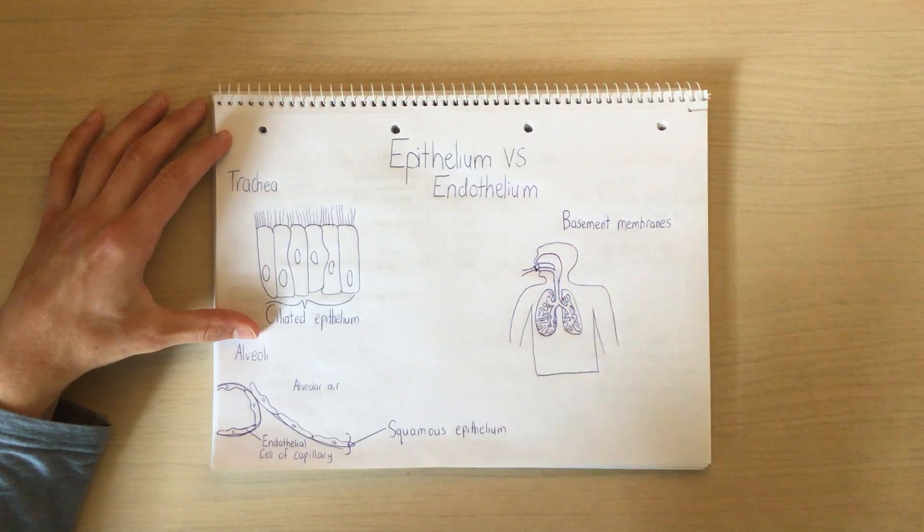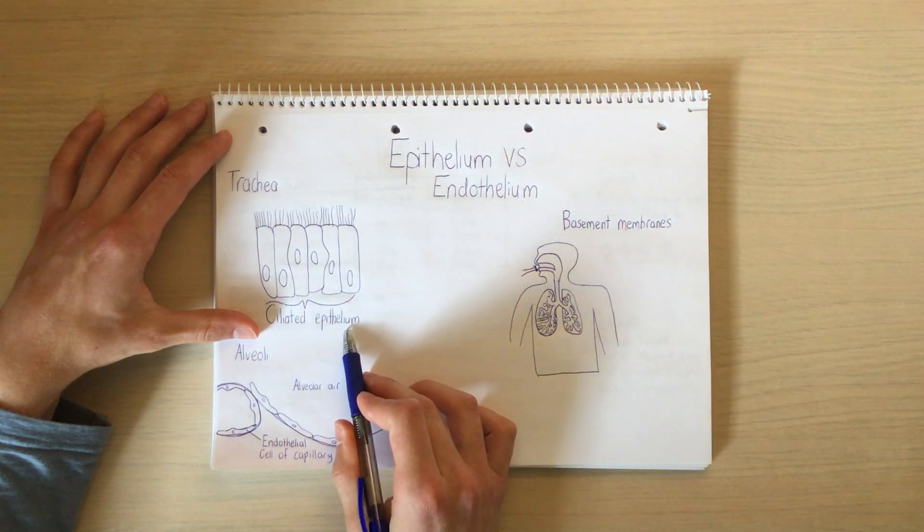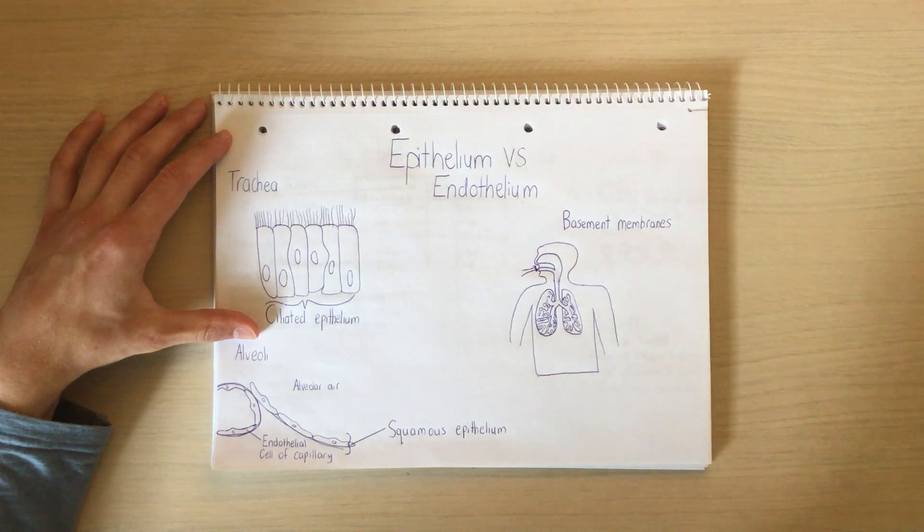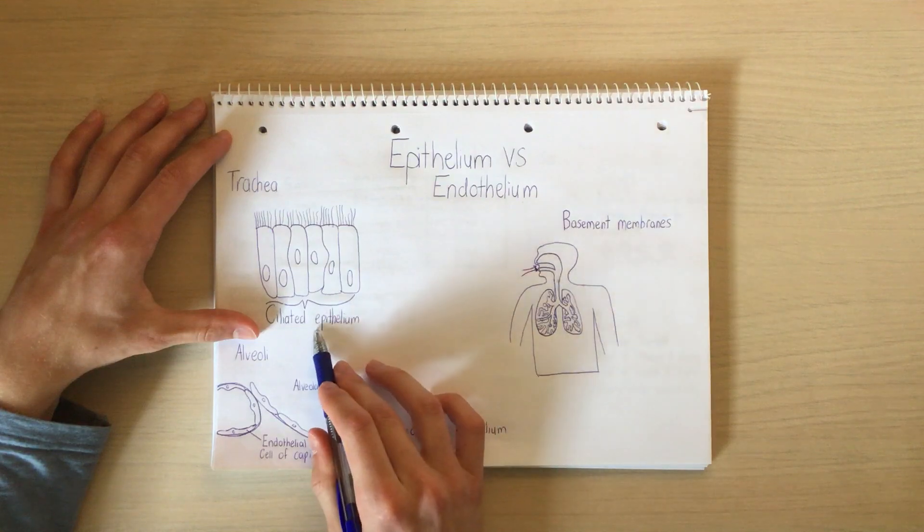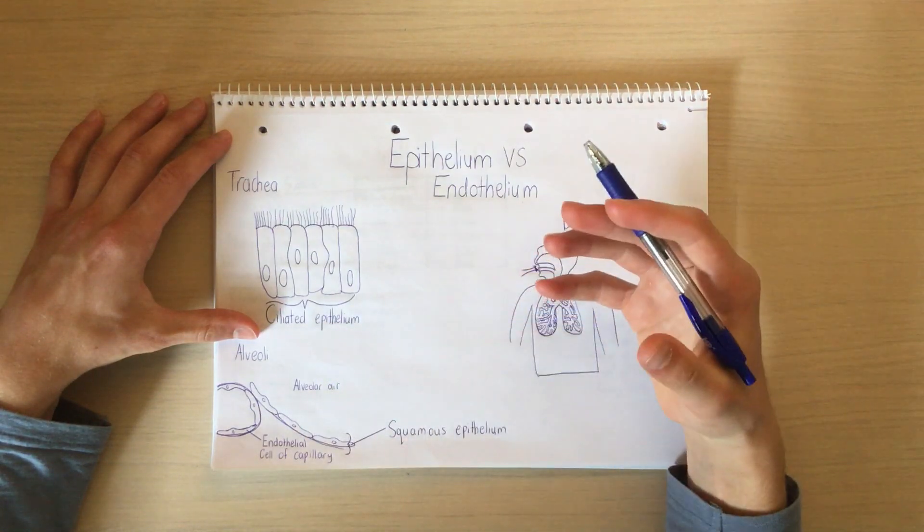So if we know what the function of the ciliated epithelium cells are, their function is to remove foreign material, then it's easy to understand that epithelium tissue interacts with the outside world.